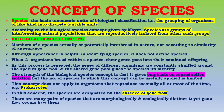First of all, we will define the term species. Species is the basic taxonomic unit of biological classification — that is, the grouping of organisms of like kinds into discrete and stable units.